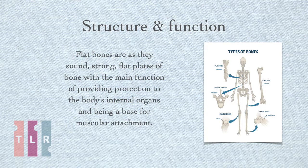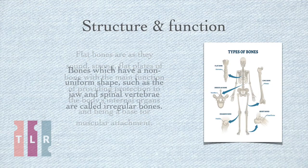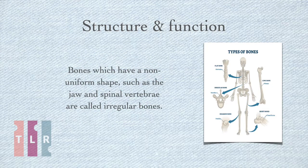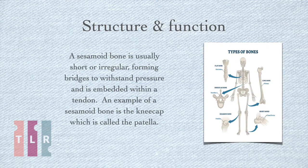Flat bones are, as they sound, strong flat plates of bone with the main function of providing protection to the body's internal organs and being a base for muscular attachment. Bones which have a non-uniform shape, such as the jaw and spinal vertebrae, are called irregular bones. A sesamoid bone is usually short or irregular, forming bridges to withstand pressure and is embedded within a tendon. An example of a sesamoid bone is the kneecap, which is called the patella.